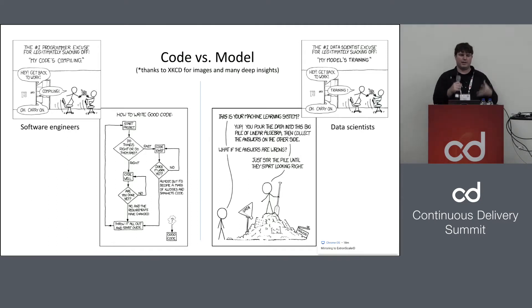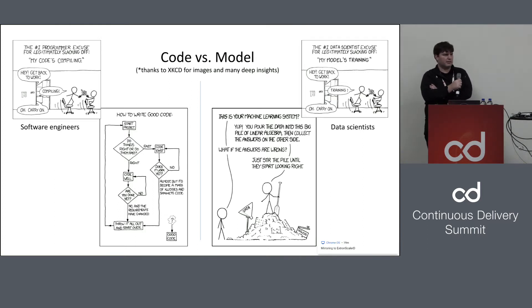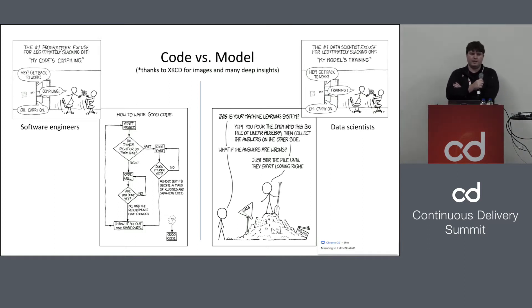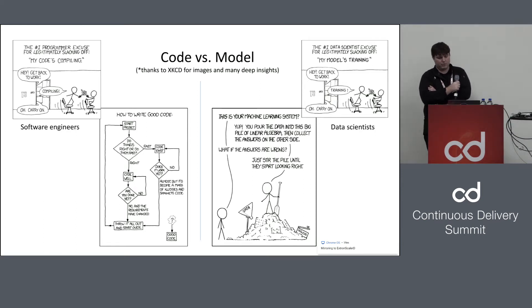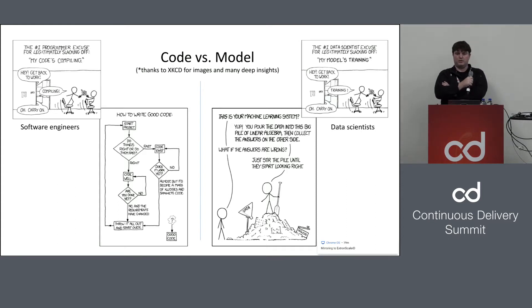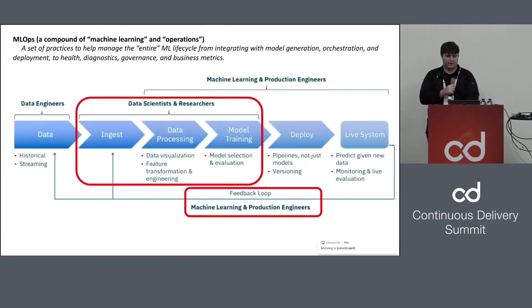If you look a level deeper and ask what is the day-to-day of a programmer versus a data scientist, I think you find that they're developing in a very iterative way. They're writing code that's bad and then fixing it, or they're getting garbage results in their model and retuning it. So I totally get this now.